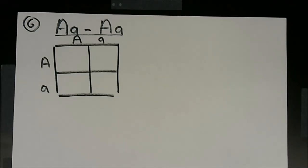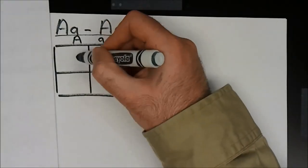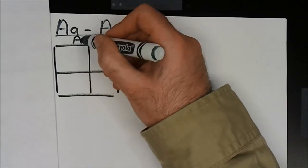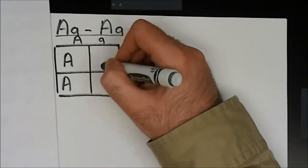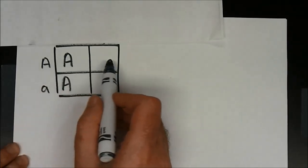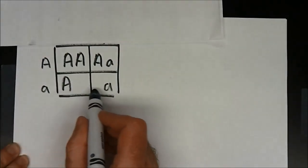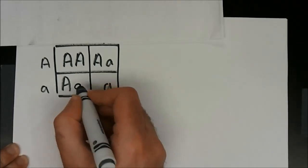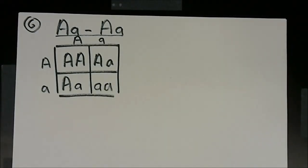Now we fill in the cross. The top parent contributes capital A to the two top boxes and little a to the two bottom boxes. The left parent contributes big A to the two left boxes and little a to the two right boxes. The resulting offspring are: AA, Aa, Aa, and aa. That completes the second Punnett square — that's question six.